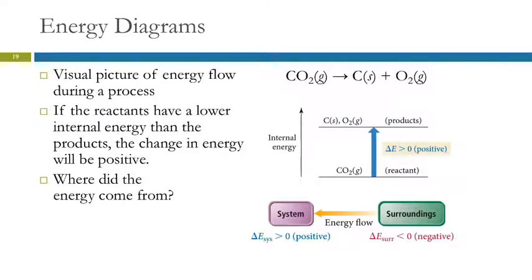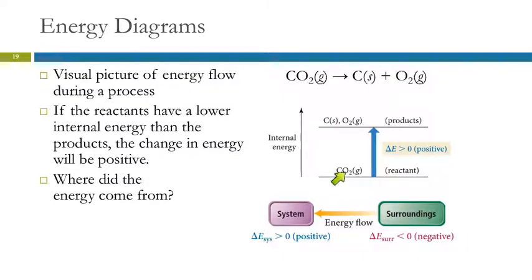There's a lot of stuff in chemistry that's very abstract — we can't make pictures of it. How do you draw a picture of energy? So we use energy diagrams to try to visualize what's going on. An energy diagram is an attempt to visualize changes in energy. We represent internal energy increasing with an arrow pointing up. For example, in the reaction carbon dioxide reacting to form carbon and oxygen, the carbon and oxygen products have higher internal energy than the reactant CO2. The reactant is lower in energy, the products are higher, so the change in energy — final minus initial — is positive.